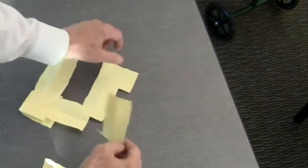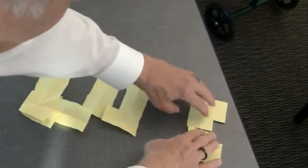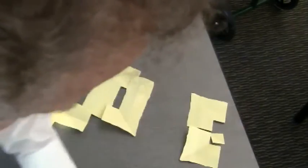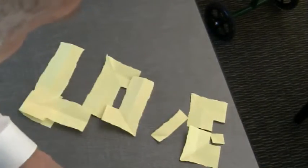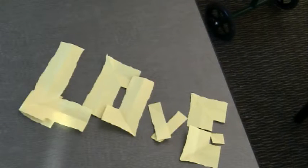We're going to take this and make it look like an O. L-O, this becomes the E, and then those two little skinny pieces of paper make your V, and you can spell out the word love.